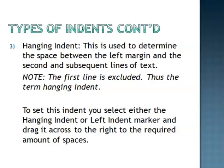The first line of text is excluded because that is taken care of by the first line indent marker. But if I wanted all the text following — the second, third, fourth, fifth lines — to be indented without touching the first line, then I will use the hanging indent. To set this indent, you select either the hanging indent or left indent marker and drag it across to the right to the required amount of spaces.